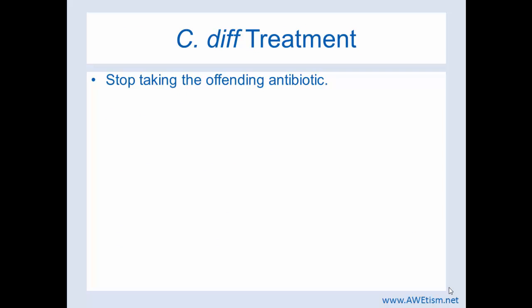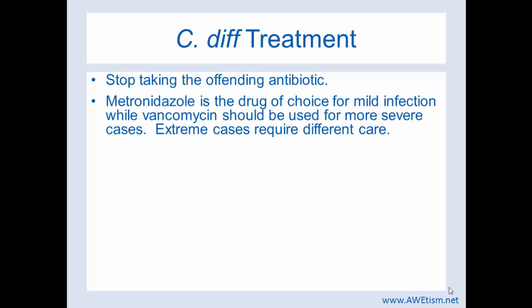For C. diff treatments, you stop taking the offending antibiotic. Metronidazole is the drug of choice for mild infection, while vancomycin should be used for more severe cases. Extreme cases require different care. Basically, when you have a C. diff infection, you are most likely taking an antibiotic that killed the target pathogenic microorganism but also killed beneficial microorganisms, allowing C. diff to overpopulate your large intestine, producing toxins which cause inflammation, increased mucus, and diarrhea.